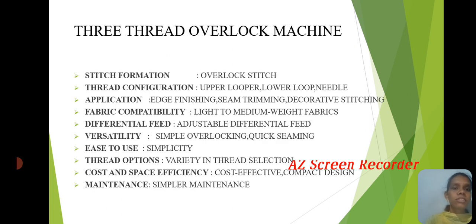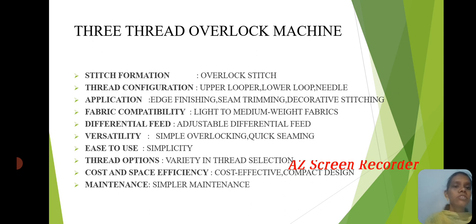The 3-thread overlock machine features an overlock stitch formation. Thread configuration includes Upper Looper, Lower Looper, and Needle. Applications include Edge Finishing, Seam Trimming, and Decorative Stitches. Fabric capability covers light to medium weight fabric with adjustable differential feed for variability.